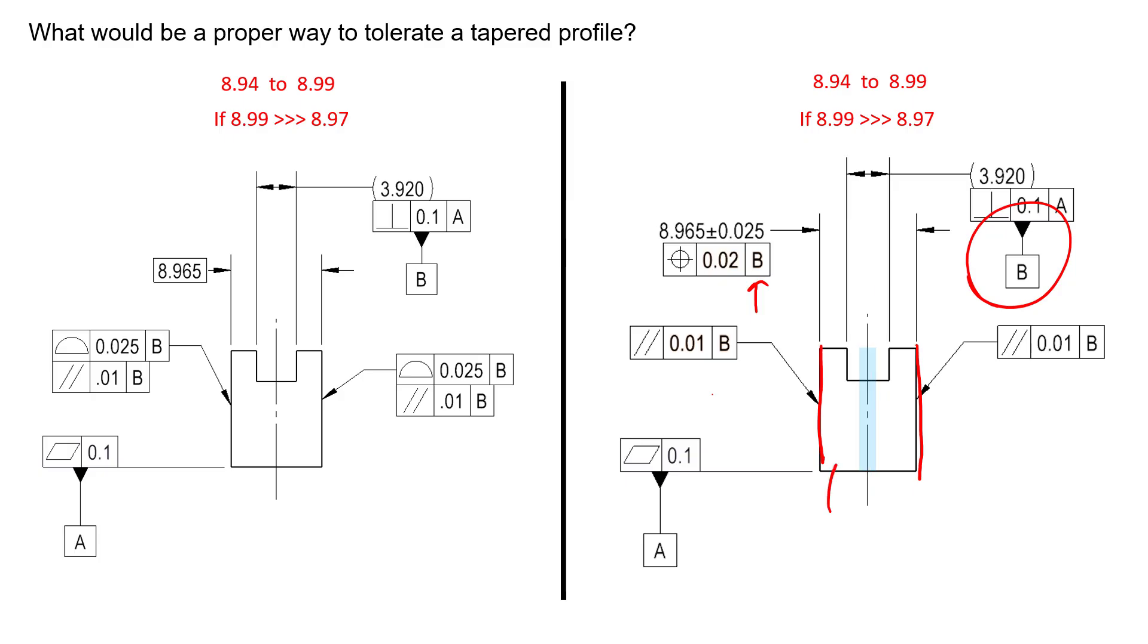We establish our positional tolerance zone for this thing right here in line with datum B. If our feature shifts over to the right, it takes its mid-plane with it. As long as that mid-plane is plus or minus 10 microns away from datum plane B, we've met our position requirement. We have position and overall size controlled.